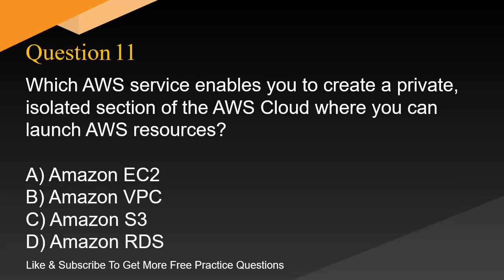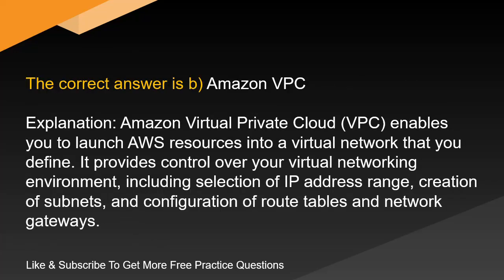Question 11. Which AWS service enables you to create a private, isolated section of the AWS cloud where you can launch AWS resources? A. Amazon EC2. B. Amazon VPC. C. Amazon S3. D. Amazon RDS. The correct answer is B: Amazon VPC.